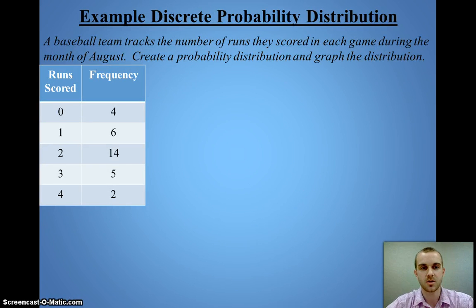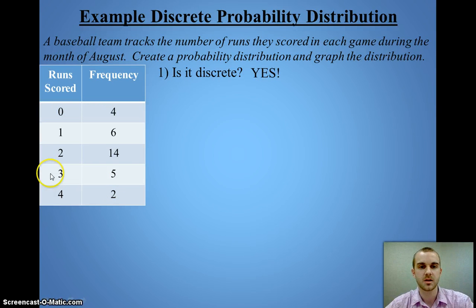Let's look at an example. Say there are 31 games a baseball team played in the month of August, and we're going to find the probability distribution for this and graph it. First, is it discrete? Yes, because I am counting the number of runs. I already have my frequency distribution provided, so I'm going to provide the third column, which is the relative frequency.